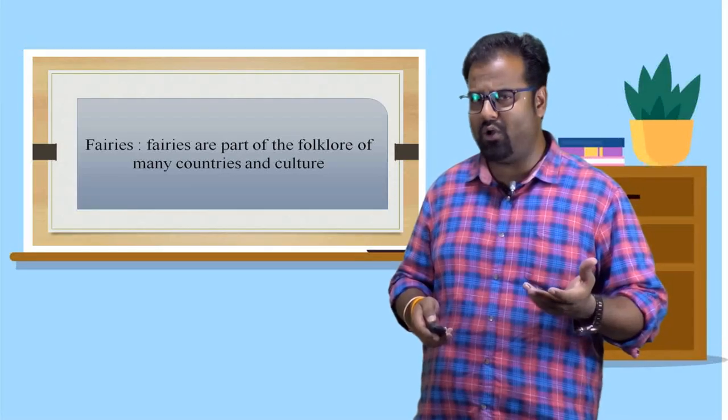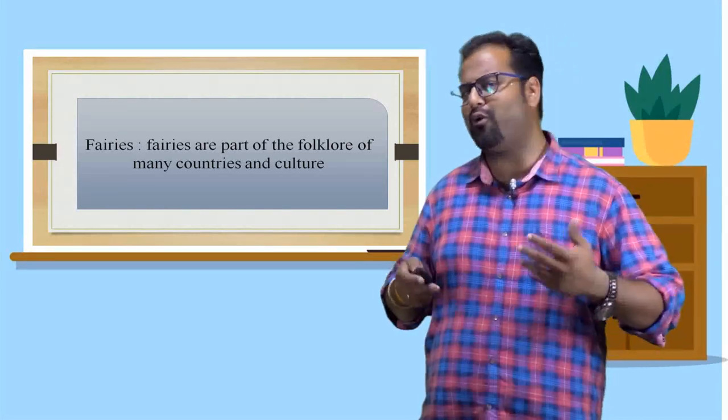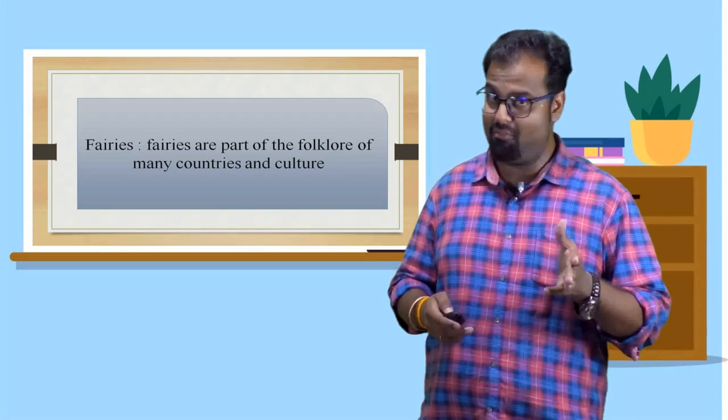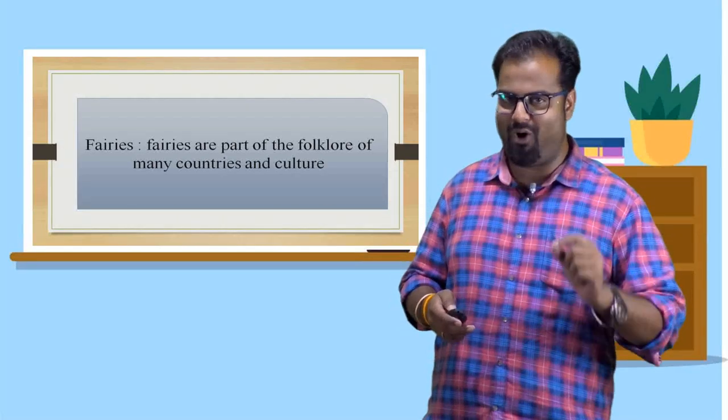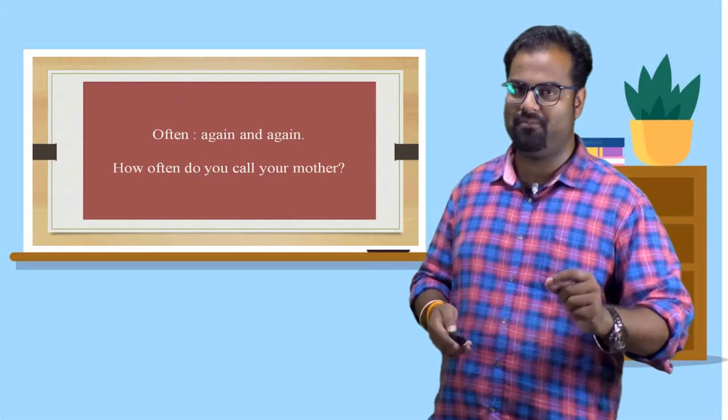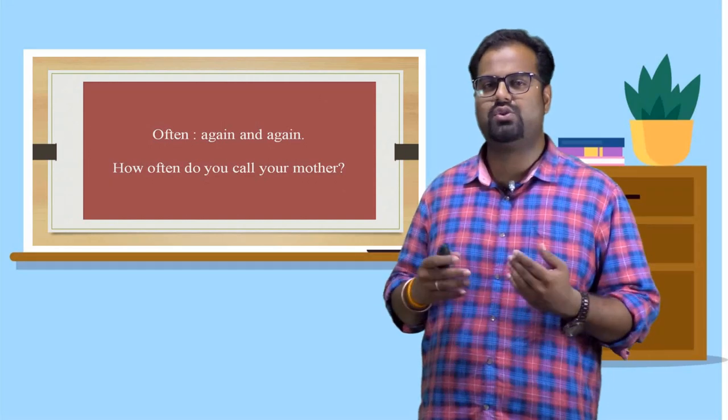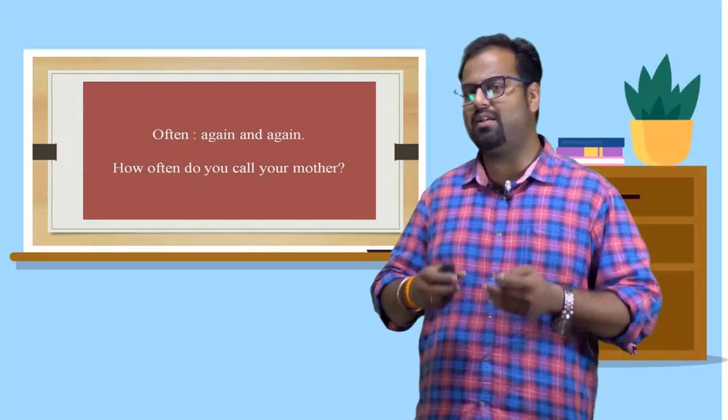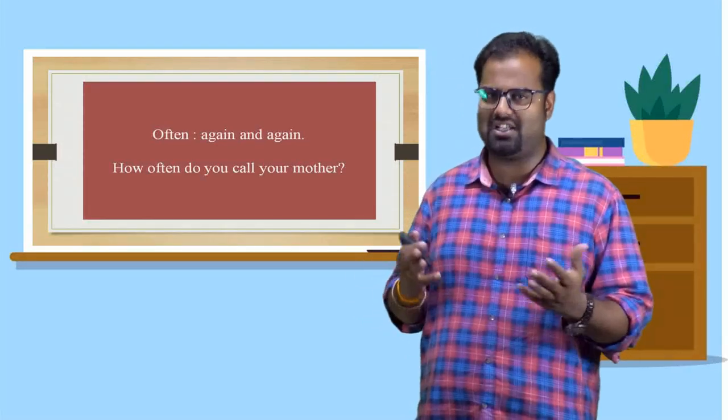How can we use this word in our own sentences? My grandmother used to tell lot of fairies tales before we go to sleep. I think most of you have this experience. Grandmas are fantastic storytellers. We want them to narrate stories just before we fall asleep. Next, often. Again and again. Often means doing an activity again and again. How often do you call your mother? Sometimes you keep on calling your mother until she responds. That's what the word about.